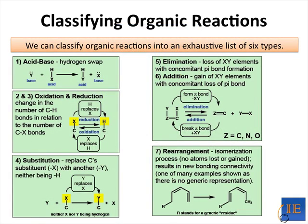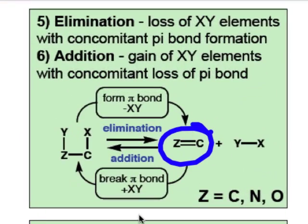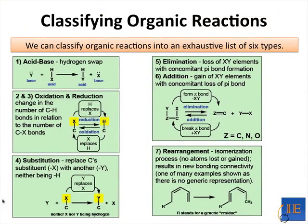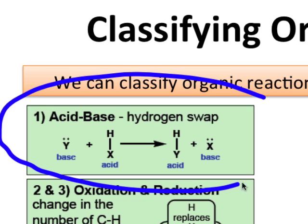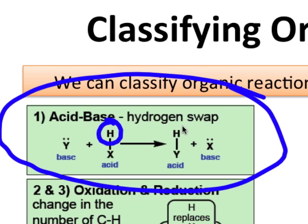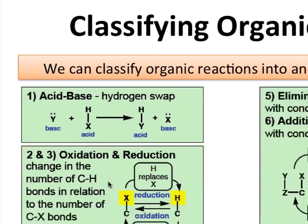We can classify organic reactions into an exhaustive list of six types. Each of the classes is characterized by certain required structural motifs, such as the double bond in addition chemistry. In this video, I'm going to focus on arguably the simplest of the six: acid-base reactions. Although the process appears very simple, a proton simply moves from one atom to another, whether such a process is favorable depends on a number of factors that I'll discuss in the video.